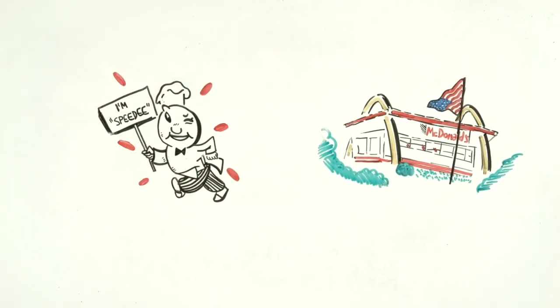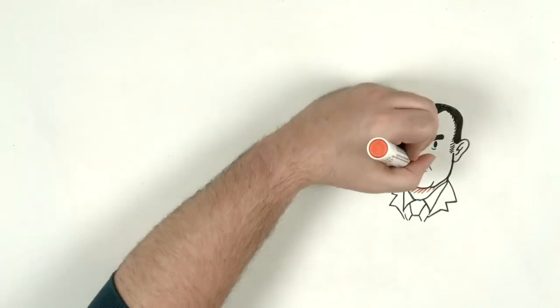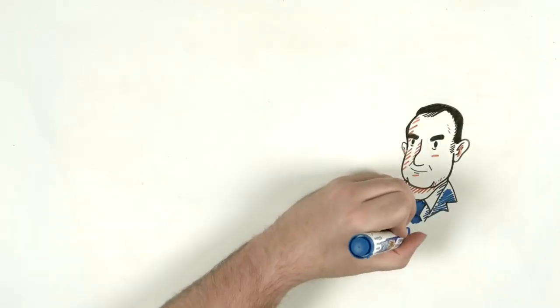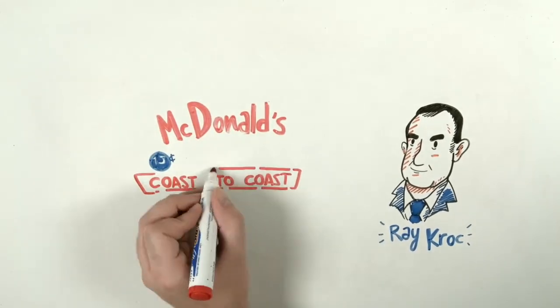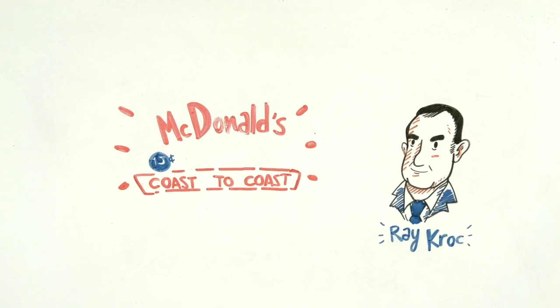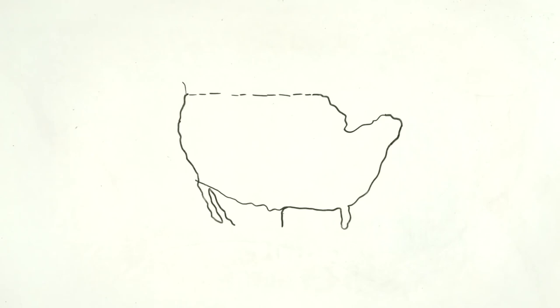But everything changed when Ray Kroc arrived, a milkshake machine salesman surprised that the brothers asked for 18 machines instead of just one. Ray realized the potential of the franchise and proposed to sell their restaurants throughout the country. The McDonald brothers told him they didn't want to handle it, so Ray took care of the expansion.